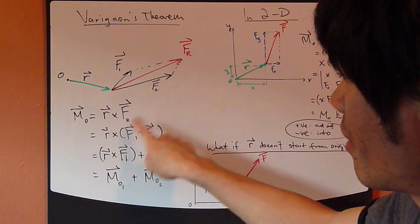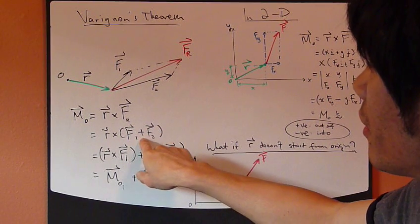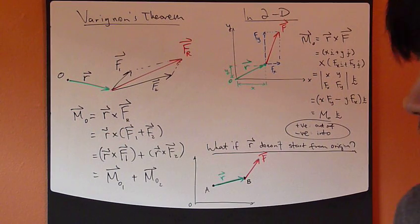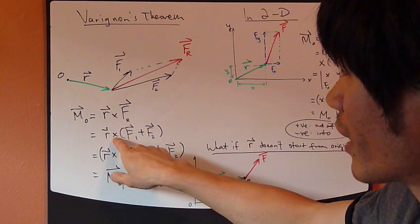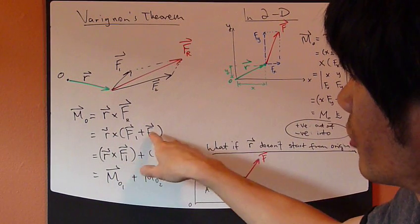Now one of the properties of cross product is distributive. So you can distribute this cross product into this sum right here. So it becomes R cross F1